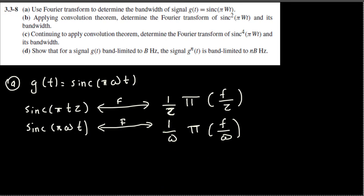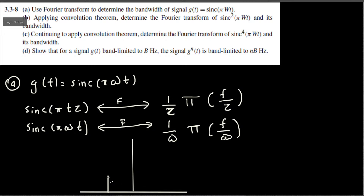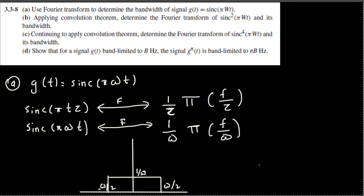This is a rectangular function. Drawing the rectangular shape: the height is the amplitude 1/ω, and the range extends from −ω/2 to +ω/2 (since f/ω gives a half-width of ω/2). Therefore, the bandwidth of this signal is ω/2. That completes Part A.